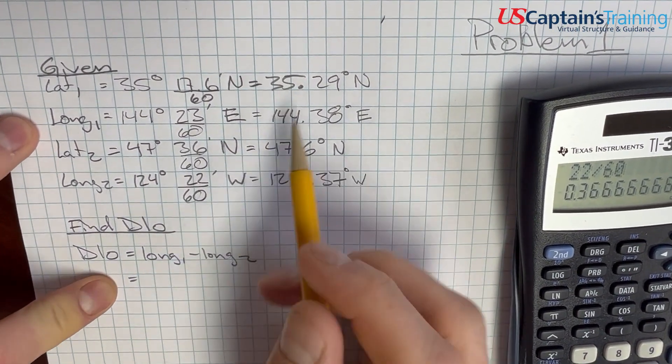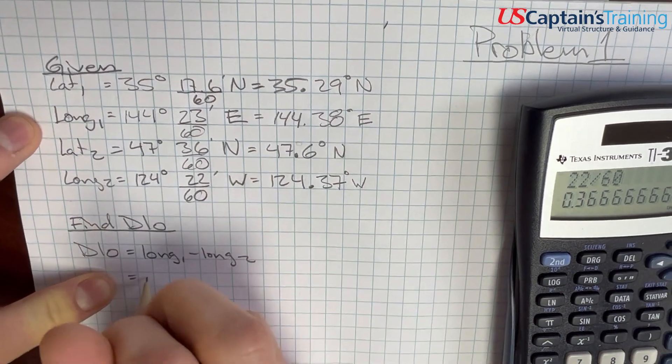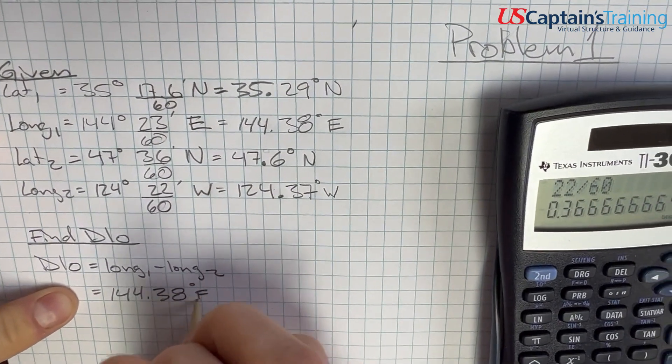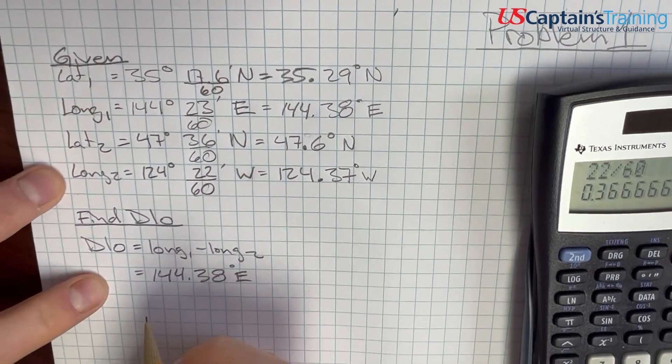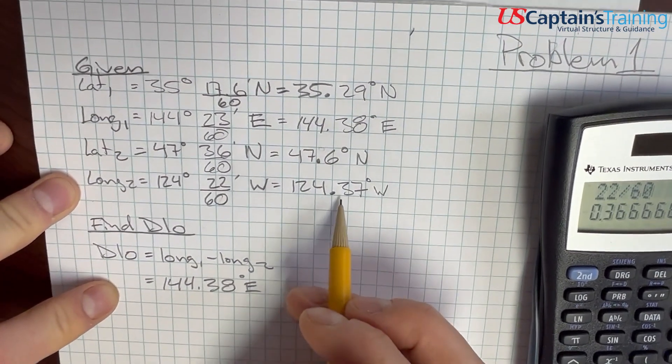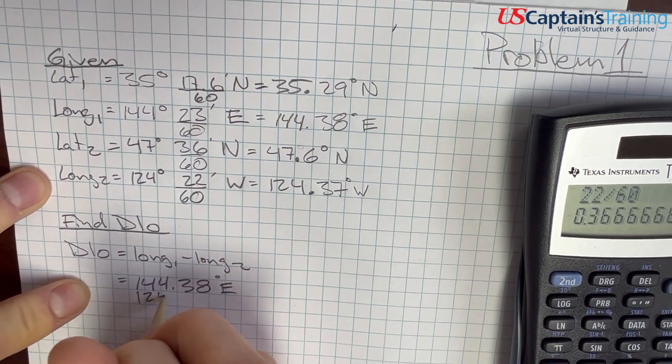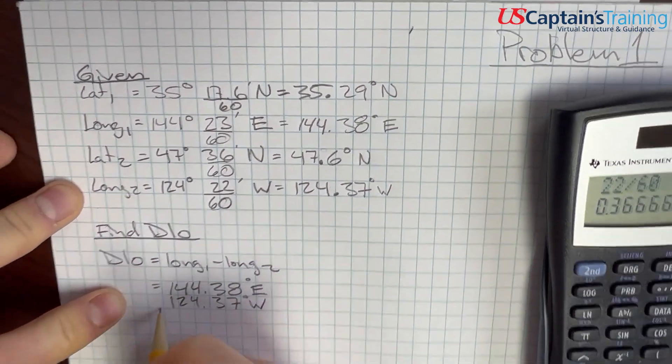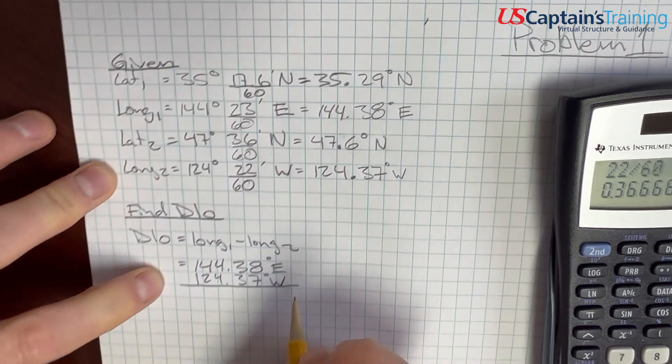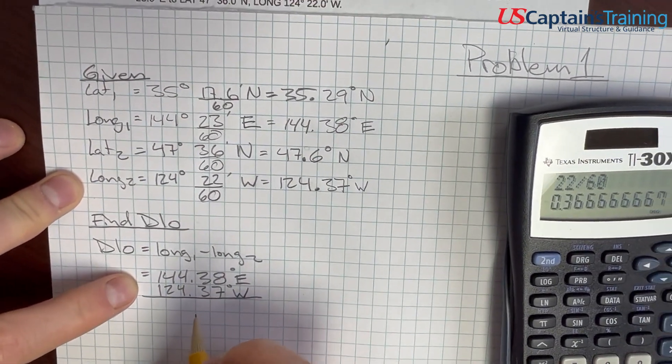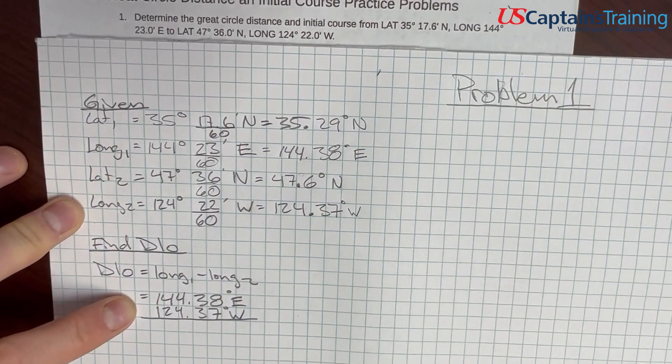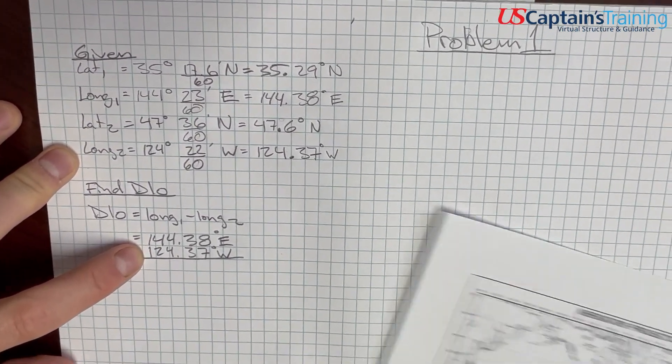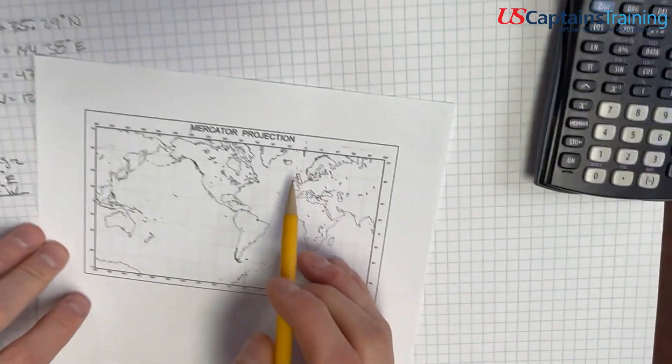Take your time with this. It seems like simple subtraction, but it's actually, it gets pretty conceptual. So, longitude 1 is 144.38 degrees east. And, longitude 2 is 124.37 degrees west. We really can't just do a subtraction. We come up with like 20 degrees, but that's not right.